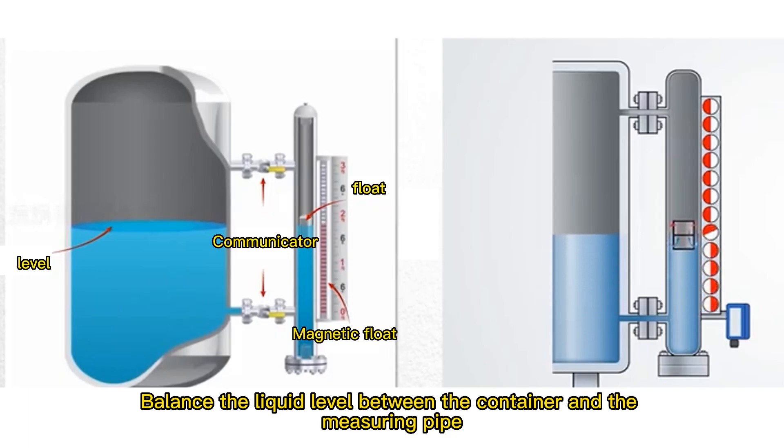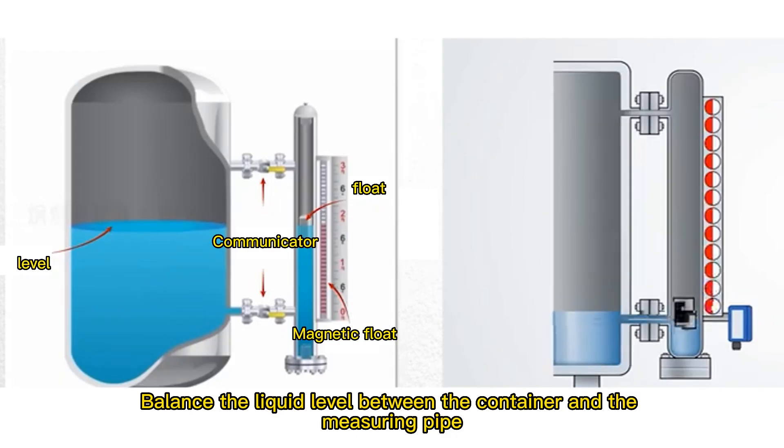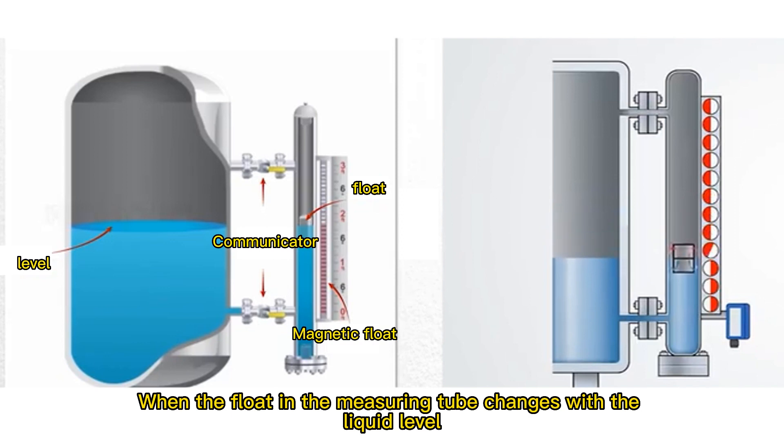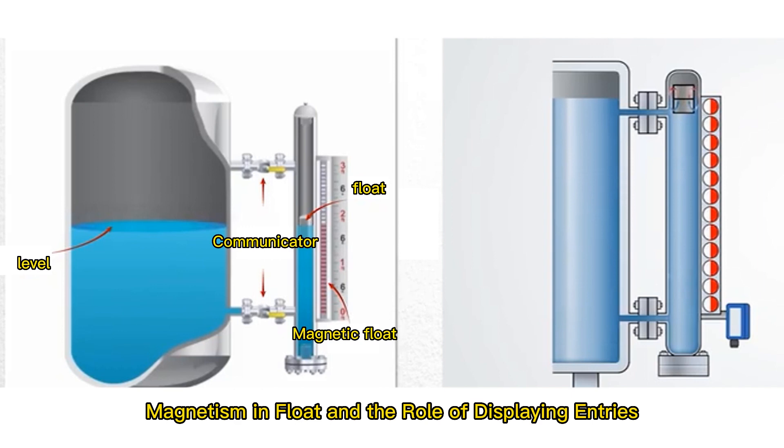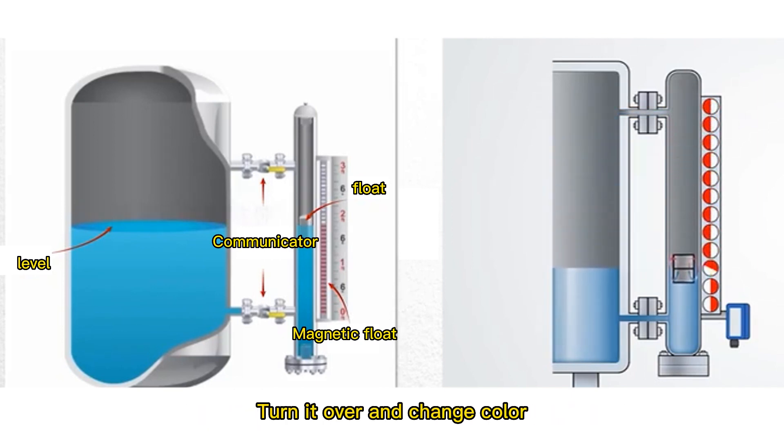It balances the liquid level between the container and the measuring pipe. When the float in the measuring tube changes with the liquid level, it magnetizes the magnetic float and the row of display indicators, turning them over and changing color.